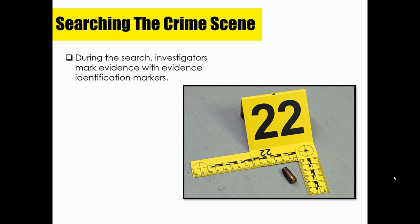During the search, investigators are likely to find evidence they didn't see in a previous step. Remember, in step three of the seven steps of crime scene investigation, investigators have already scanned the crime scene and may have marked initial evidence. Now, as they execute the search pattern, they will likely find more evidence. Any new evidence must be marked with an evidence marker. Photographers must go back and photograph that evidence, and sketchers must add it to their crime scene sketches — everything must work together to maintain the integrity of the crime scene.